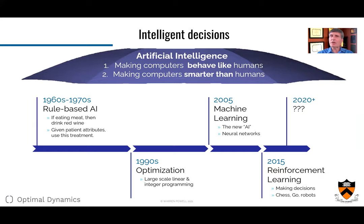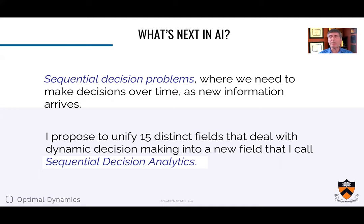In the early 2000s, machine learning became the new AI — especially neural networks, where people could do amazing things like recognize your voice. Starting a few years ago, reinforcement learning started to hit the press, with major breakthroughs in playing chess and Go, again capturing the public's imagination. So what's opening for the 2020s? I'm going to say what's next in AI is sequential decision problems, where we need to make decisions over time as new information arrives. In this talk, I'm going to propose to unify 15 distinct fields that deal with dynamic decision-making and put it into a new field that I call sequential decision analytics.